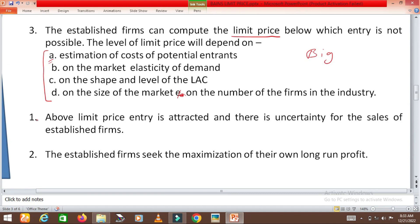Above limit price, entry is attracted and there is uncertainty for the sales of established firms. If the firm is going to charge a price which is above that computed limit price, then there will be entry of firms which will lower the market share of the existing firms. The firms will not intend to attract this entry because this phenomena will make the market very uncertain and Bain says that the firms want certain profit or certain revenue.